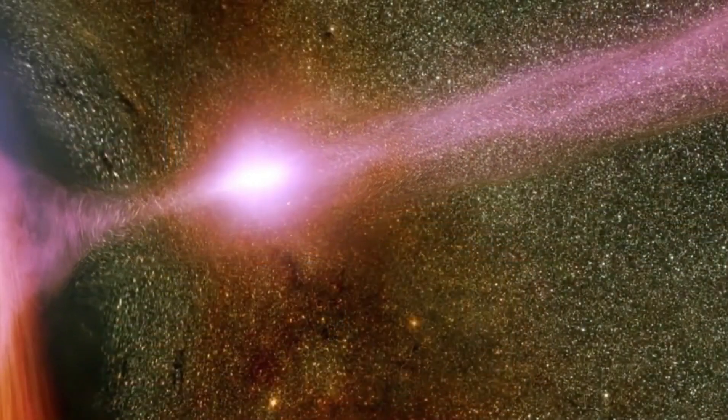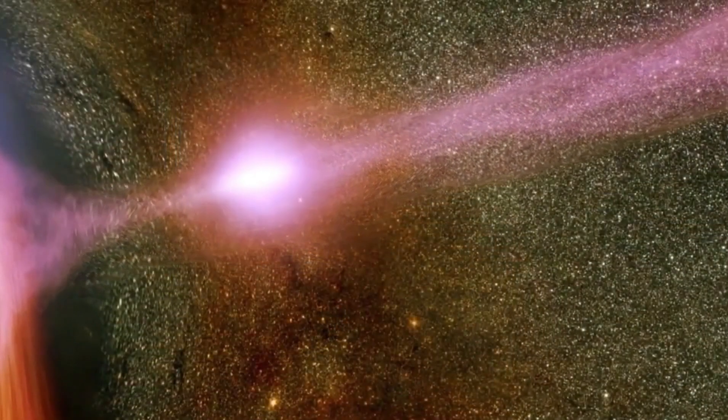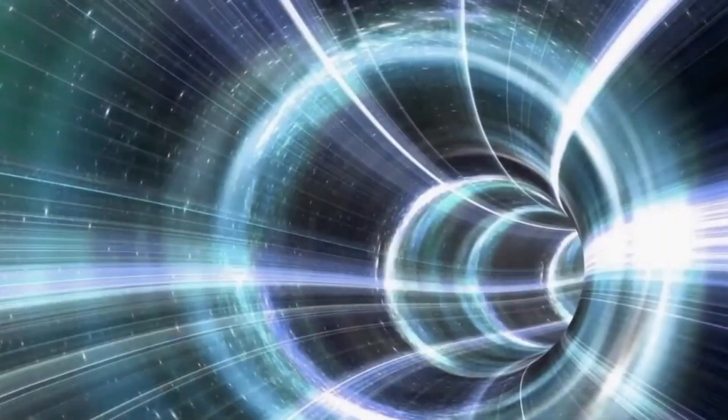However, spacetime gets way more complicated when you have a mass which rotates. And so far, we only know about the existence of black holes that have angular momentum, or a spin. They form from the collapse of rotating massive stars. And as matter collapses, the rotation is conserved, leading to the formation of a spinning black hole.